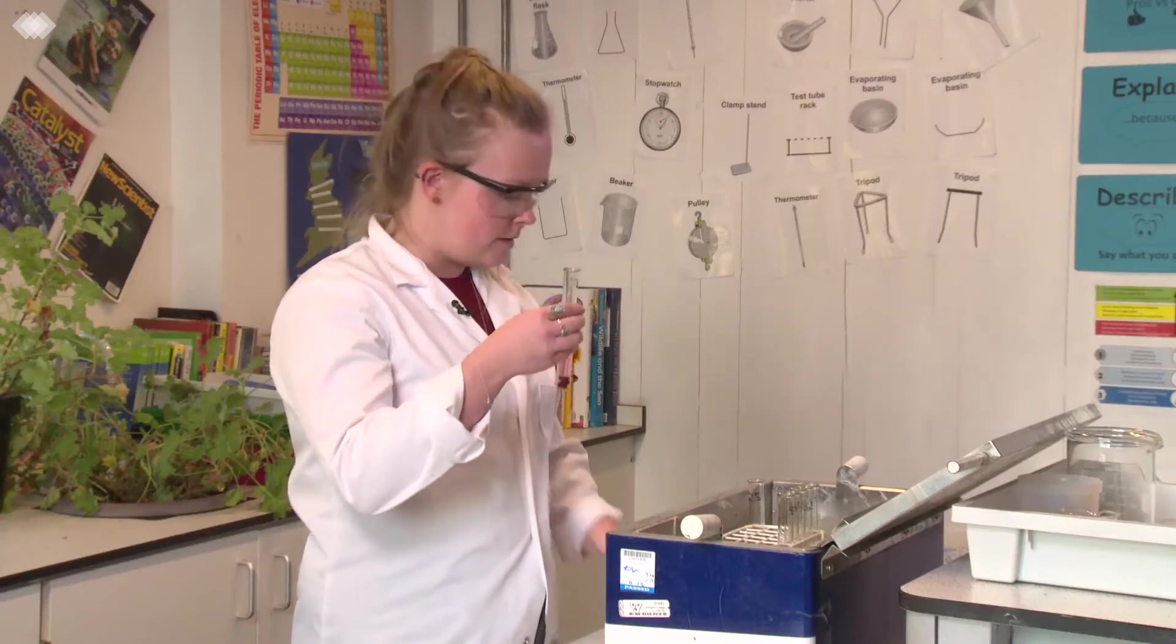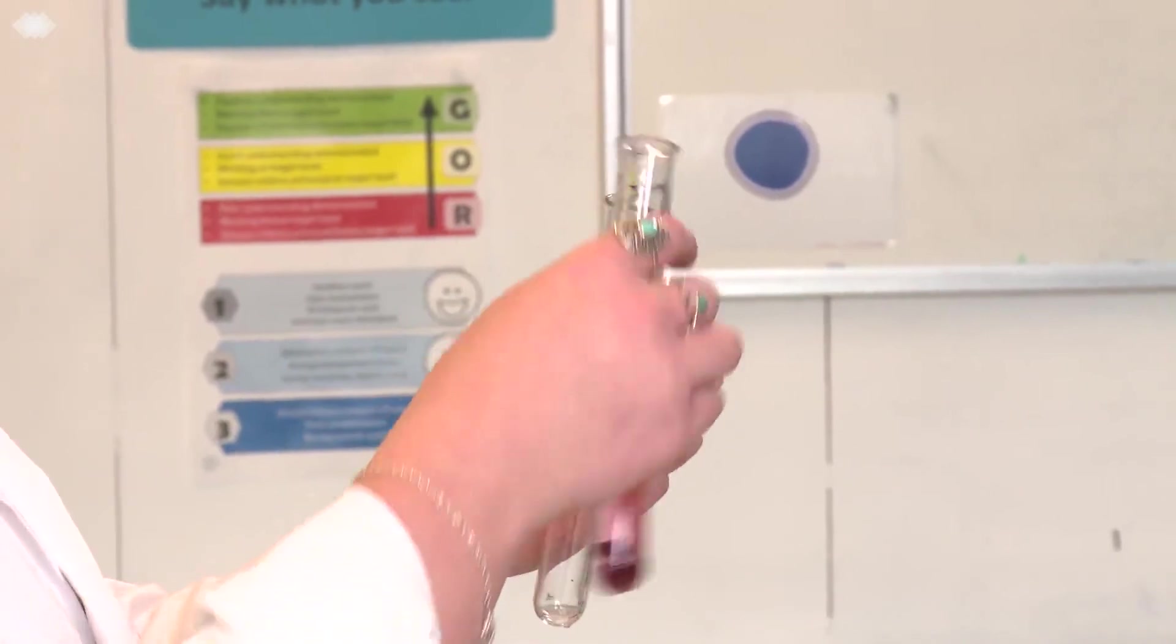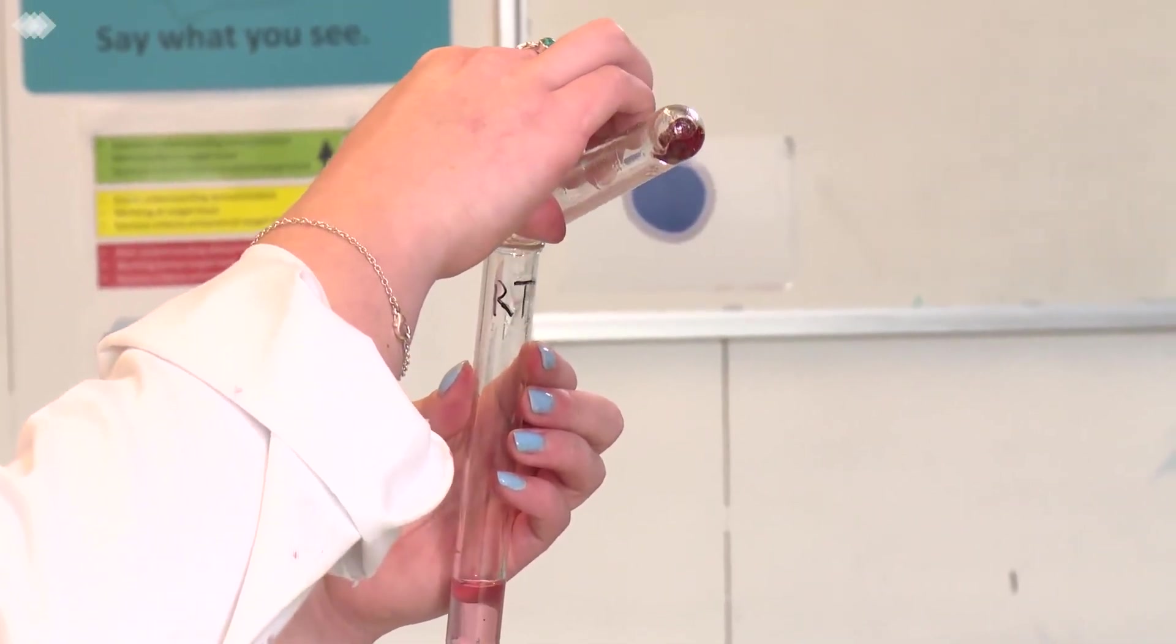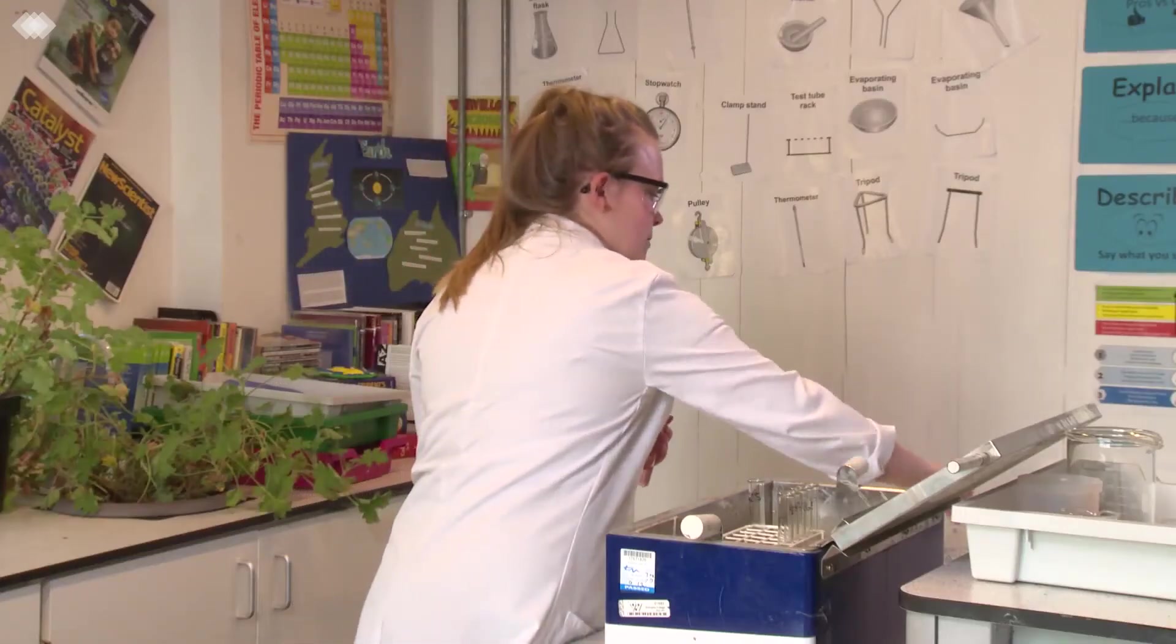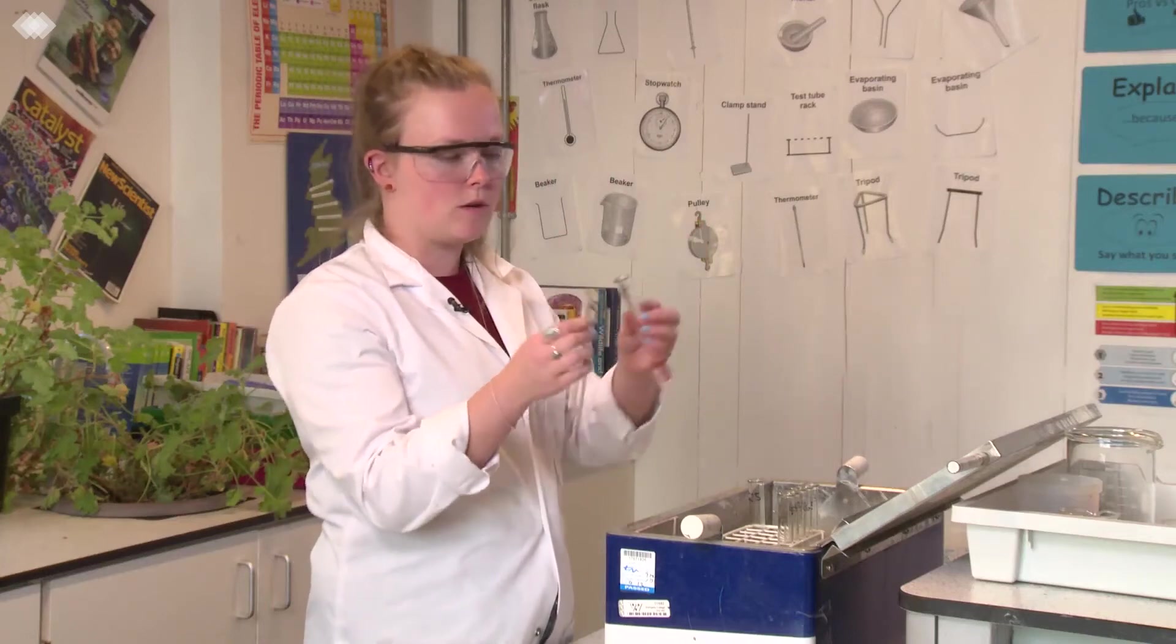Pour the liquid that's here into a test tube marked RT, receiving test tube. Put the beetroot discs into a waste beaker. And pour this liquid back into the test tube marked E25.